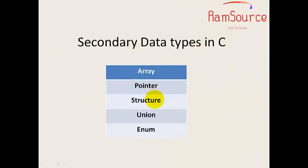Secondary data types in C: Array, Pointer, Structure, Union - we will see these in our upcoming sessions.